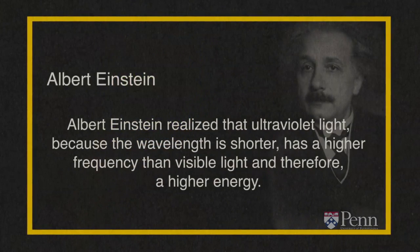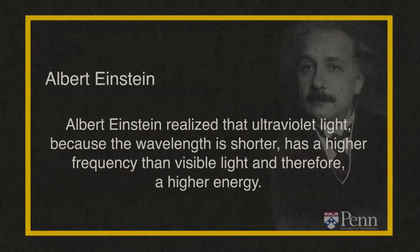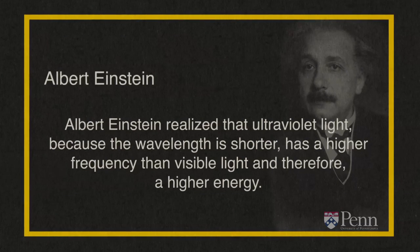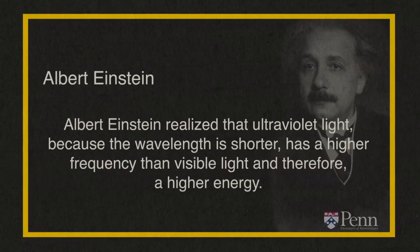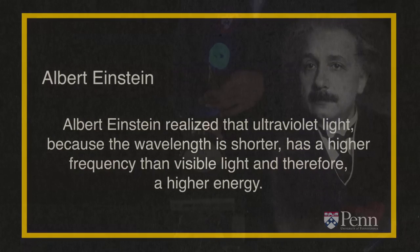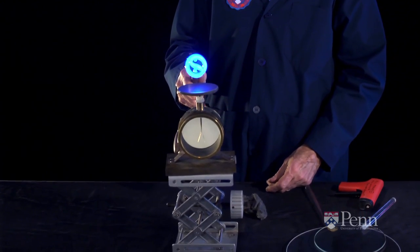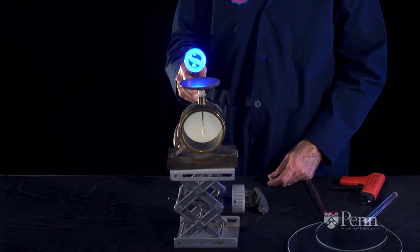What Albert Einstein realized was that that light, because the wavelength is shorter, has a higher frequency than visible light, and therefore a higher energy. And it turns out that ultraviolet light is going to affect the zinc very differently than visible light.